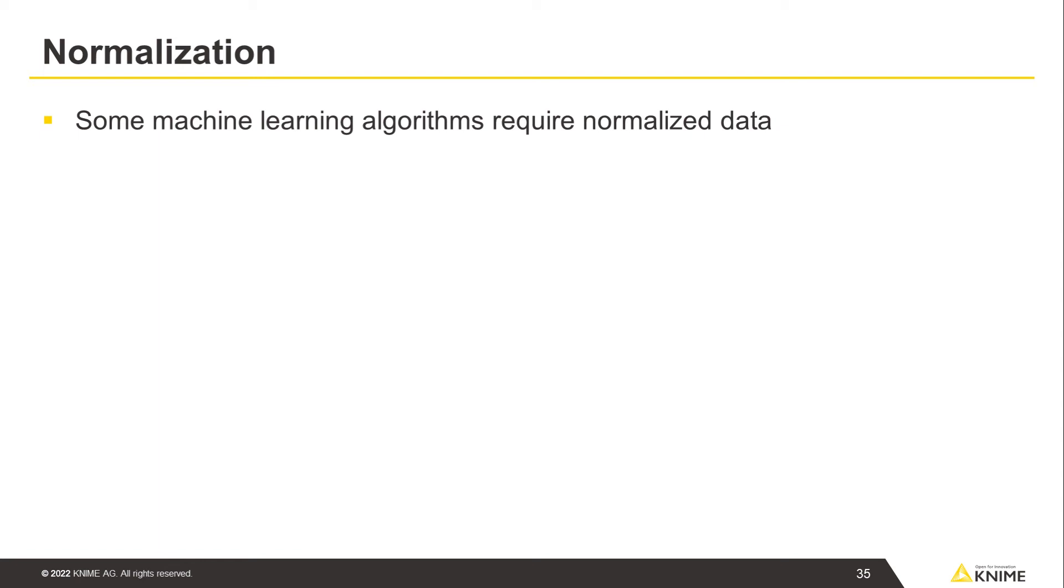The last data preprocessing step that we introduce in this video is normalization. Some machine learning algorithms require normalized data. If the algorithm involves a distance or a variance measure, then the data needs to be normalized. Otherwise, non-normalized features with larger ranges dominate the algorithm execution.